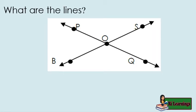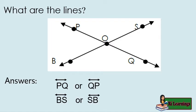What are the lines in the figure below? Lines PQ and BS are extended indefinitely on both ends, which are represented by arrows at both ends. Hence we get line PQ or QP, and line BS or SB.